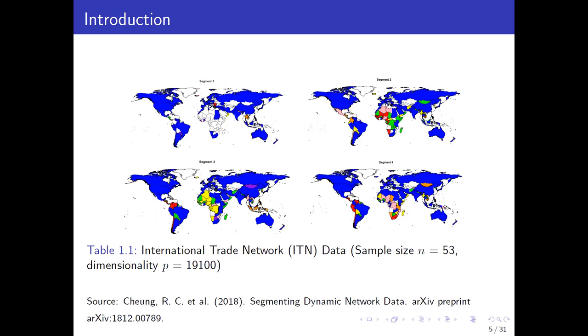The next example is about the World Trade Network. At each time point, we can collect the data about imports and exports between any two countries in the world. Using this data, we can detect the underlying trading communities. In each subfigure, we mark the countries from the same community using the same color. By detecting the underlying mean shift in these 53 vectors, we will be able to monitor the underlying changes in the World Trade Network.